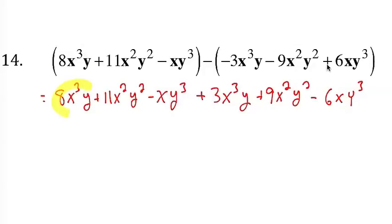So the x to the power of 3y's first. So I have 8x to the power of 3y plus 3x to the power of 3y, and that makes 11x to the power of 3y.